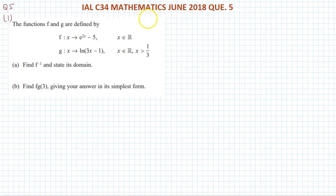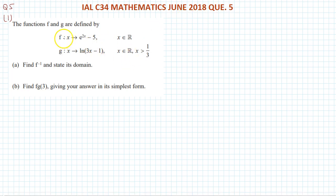The functions f and g are defined by f(x) = e^(2x - 5) and g(x) = ln(3x - 1). Find f inverse.